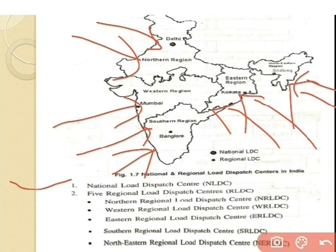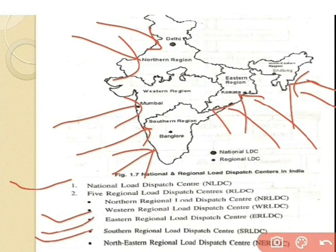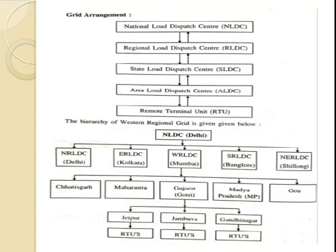The five regional load dispatch centers are: first, the Northern Regional Load Dispatch Center, that is NRLDC; second, the Western Regional Load Dispatch Center; third, the Southern Regional Load Dispatch Center; fourth, the Eastern Regional Load Dispatch Center; and fifth, the North-Eastern Regional Load Dispatch Center. All national and regional load dispatch centers are located in India.